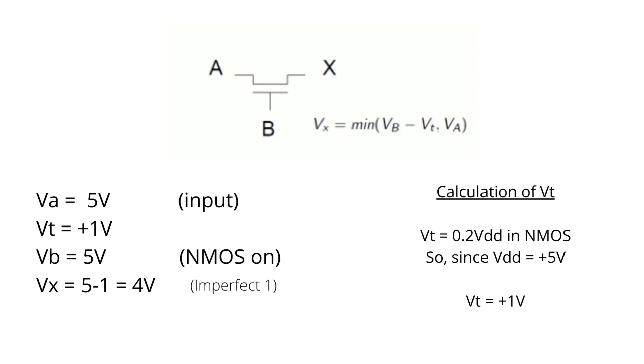The VB, which is the input, let's say that the NMOS is on, will be having 5 volts for VB as well. So when we calculate the drain voltage eventually, we get VB minus VT, which is 5 minus 1, and we get 4 volts.